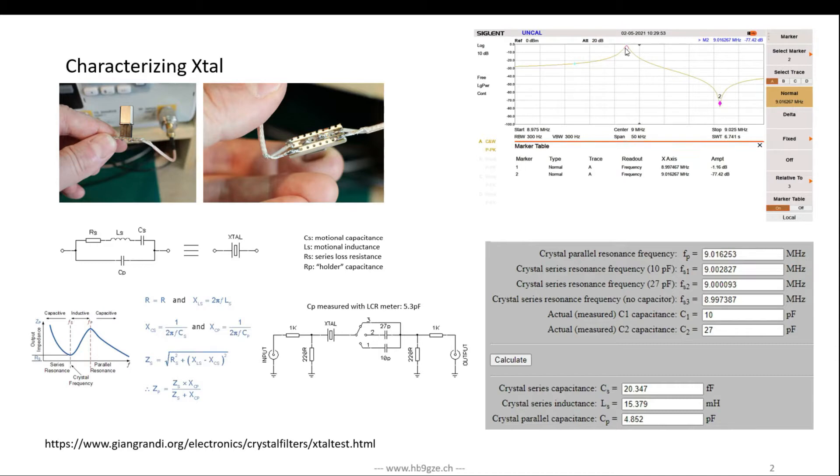Interestingly, you see the 9 megahertz is right here, and the series resonant frequency is below it. But when you use these crystals in a Colpitts oscillator or Pierce oscillator, you usually work on the slope here. You have to have a slope for the crystal to oscillate at the proper frequency.